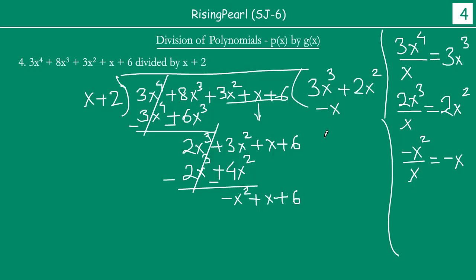So we have minus x as our third term. We take minus x, you multiply this by x plus 2. So minus x times x will give you minus x square. And minus x times 2 will be minus 2x. Minus 2x. Then when you subtract this, sign changes. So this cancels out. Now x plus 2x will become 3x, plus 6 will come down.